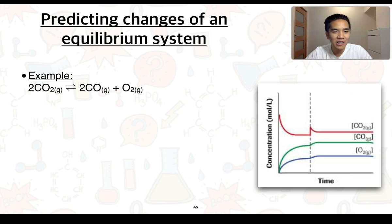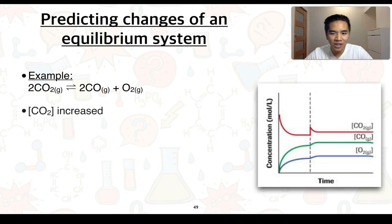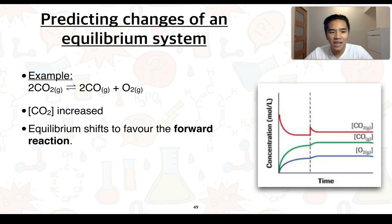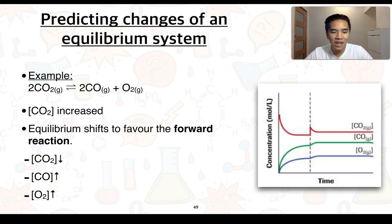For our next example, we consider the decomposition of carbon dioxide to form carbon monoxide and oxygen. In the graph to the right, at the time indicated by the dashed line, we notice an increase in the concentration of carbon dioxide, which then results in a decrease in CO2 but an increase in carbon monoxide and oxygen. So equilibrium shifts to favor the forward reaction, helping decrease the concentration of CO2 while increasing CO and O2.